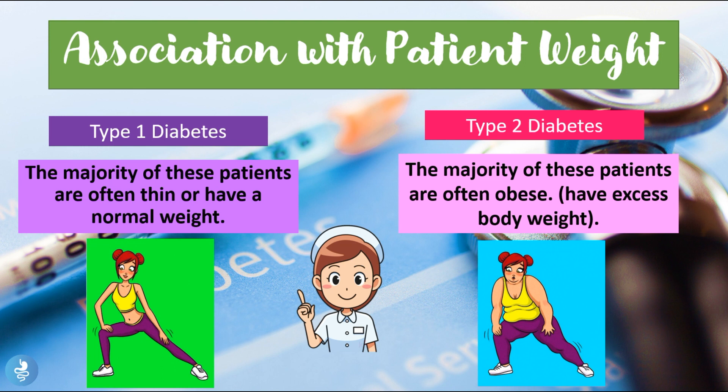Regarding association with patient weight: in type 1 diabetes the majority of patients are often thin or have a normal weight, but in type 2 diabetes the majority of patients are often obese or have excess body weight.